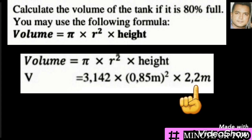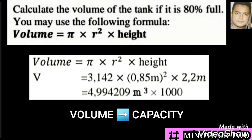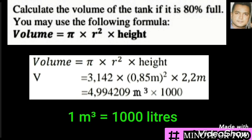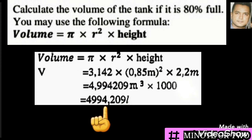Our radius is 0.85 meters and our height is 2.2 meters, converted from 2200 millimeters. The calculation gives us 4.994209 m³. We've worked out the volume, and now we need to convert it into capacity in liters. We know that 1 m³ equals 1000 liters — this is information you must know, as the examiner may not always provide it. Multiplying by 1000 gives us 4994.209 liters.